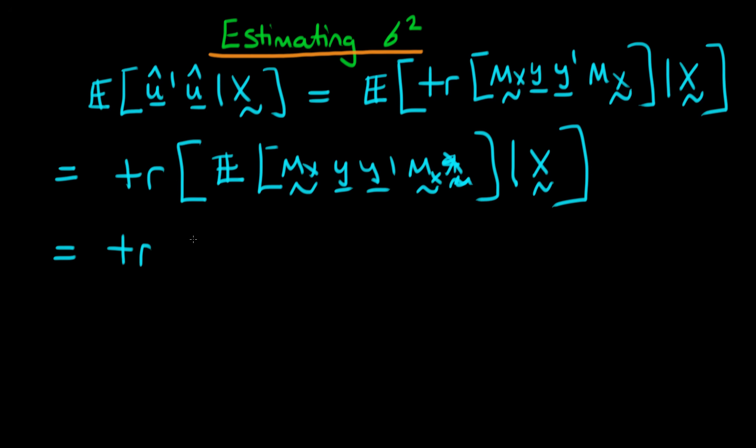Okay, so this is equal to the trace. The expectations operator or the conditional expectation operator isn't going to affect these mx terms because the expectation of them is just themselves, since mx just contains x. So the only thing we're left with to take the expectation of is: we have mx times the expectation of y times y primed given x, and then multiplying afterwards by mx primed.